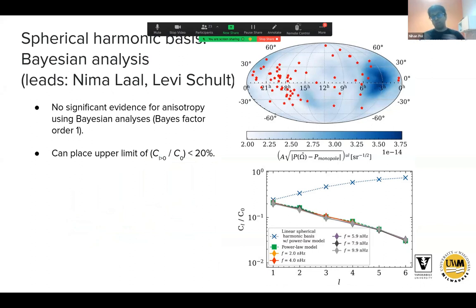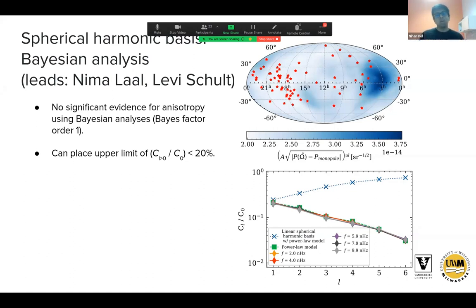In the Bayesian framework using auto plus cross correlations, we again find no significant evidence for anisotropy over isotropy — Bayes factors are all on the order of one. The upper limits on deviations from isotropy and the corresponding upper limits on the angular power spectrum are derived using both standard spherical harmonics and the square root spherical harmonic basis. Using the square root spherical harmonic basis, we can place upper limits of about 20% on the level of anisotropy in the dataset.